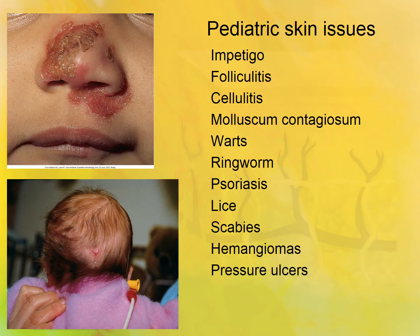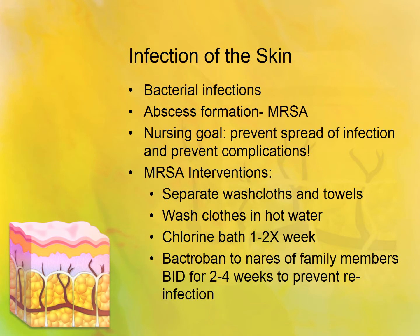Other things you're probably familiar with: ringworm, psoriasis can also affect children, lice, scabies, hemangiomas, and pressure ulcers. First, we'll talk about things that cause infections of the skin - things like impetigo, folliculitis, cellulitis, and staph infections. You should definitely read through the MRSA interventions as well because this is something we see in the community.